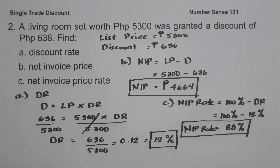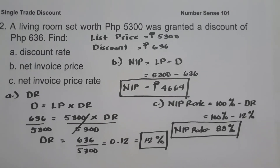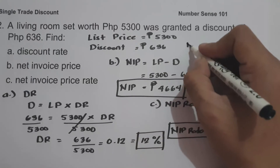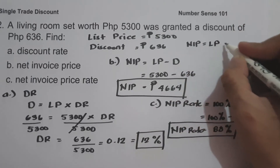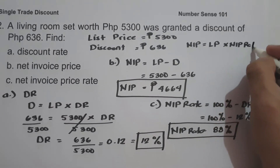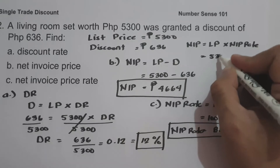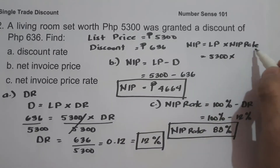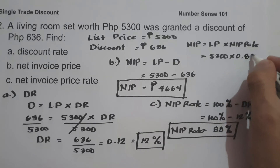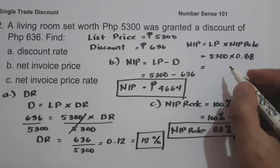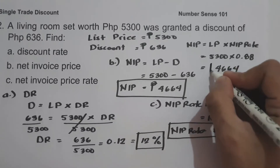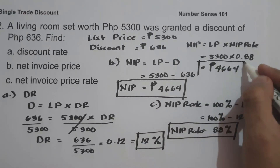Another way to find the net invoice price using the NIP rate: NIP equals list price multiplied by the NIP rate. List price five thousand three hundred multiplied by the NIP rate eighty-eight percent, or zero point eighty-eight. If you multiply this, you get four thousand six hundred sixty-four pesos. We come up with the same answer.